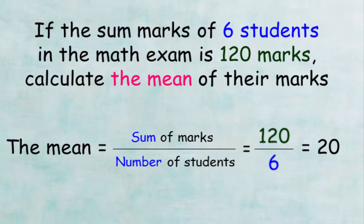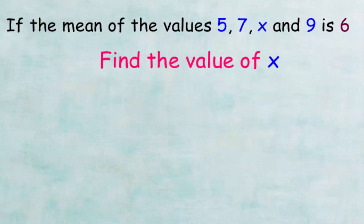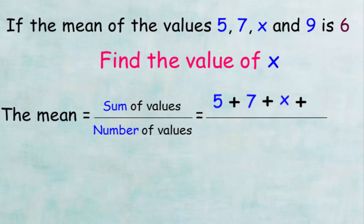Finally, what if we have the mean but there is an unknown value in the set? If the mean of the values 5, 7, x, and 9 is 6, find the value of x. We write the law: (5 + 7 + x + 9) divided by 4, which equals 6.